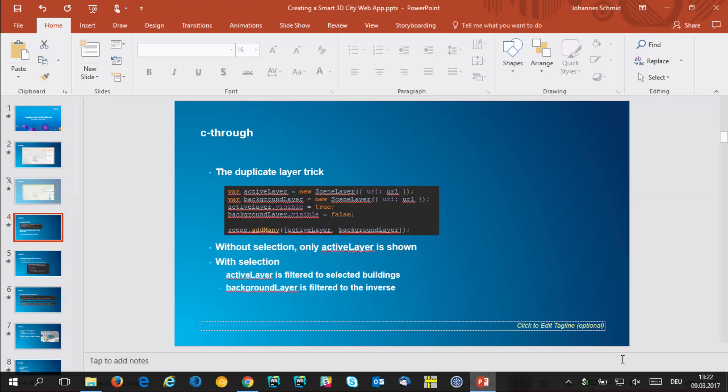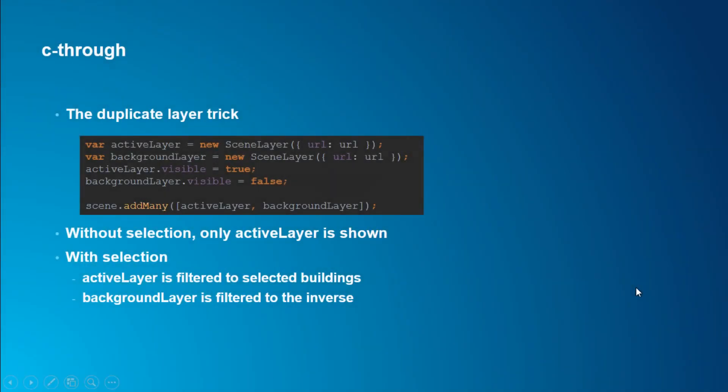For the remainder of the session I'll talk about code, mainly about scene layers and how you use them to make these things happen. Scene layers are built for visualization in 3D. The first layer type was the mesh layer — the way to get 3D meshes into the JavaScript API. We've since extended it with other data types: points, point clouds, integrated meshes. In this presentation I'll focus on 3D object scene layers.